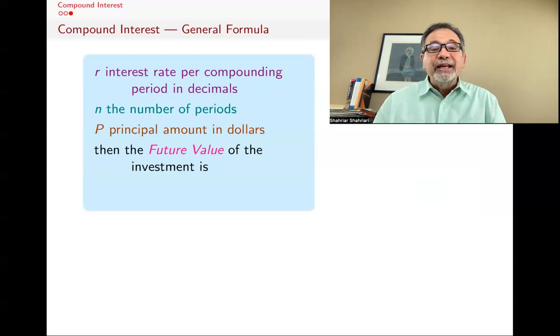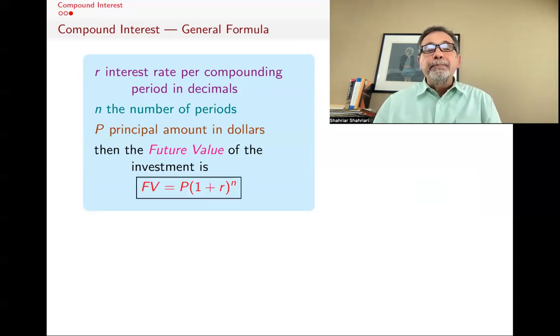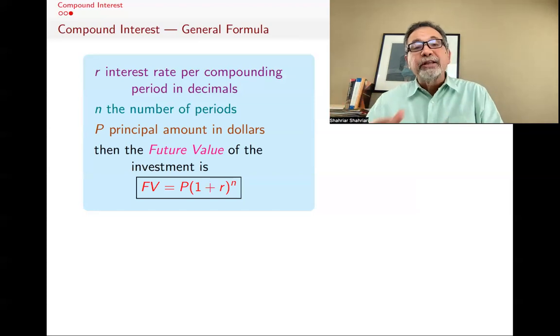And if you start with P as your principal, as what you started out with, then the value of your money, your investment after n periods will be P times 1 plus r to the n. And again, the argument, the reasoning was what we gave. If you start with P, after one month, you have P times 1 plus r. After two periods, not months, periods, you have P times 1 plus r squared, and so on. And so after n periods, you have P times 1 plus r to the n.